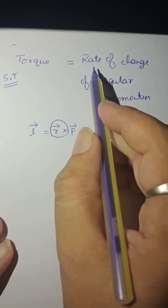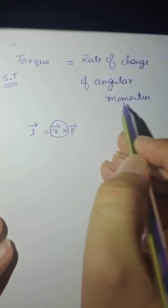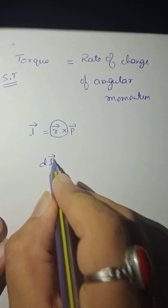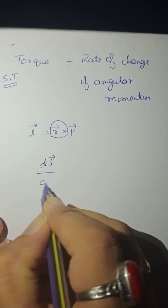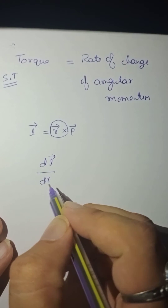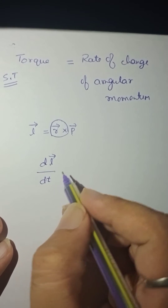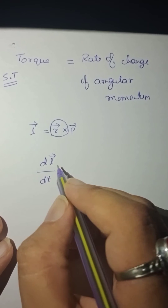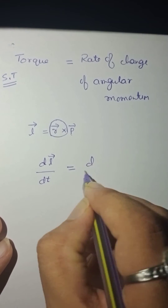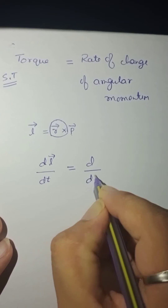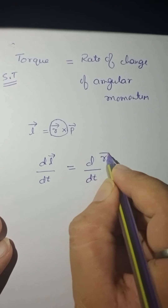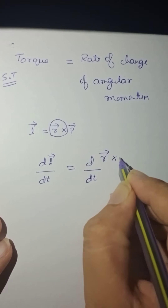Now we will see how to write rate of change of angular momentum. Let DL by DT — DL by DT stands for rate of change of angular momentum. Now I will make a substitution for L. D by DT, in the place of L, I write R cross P.